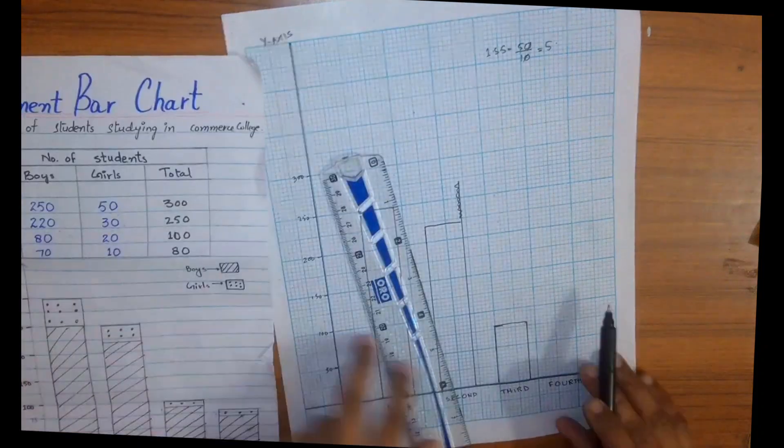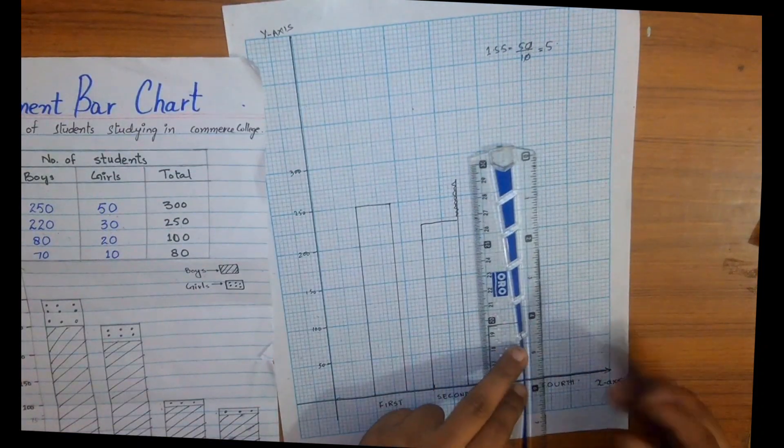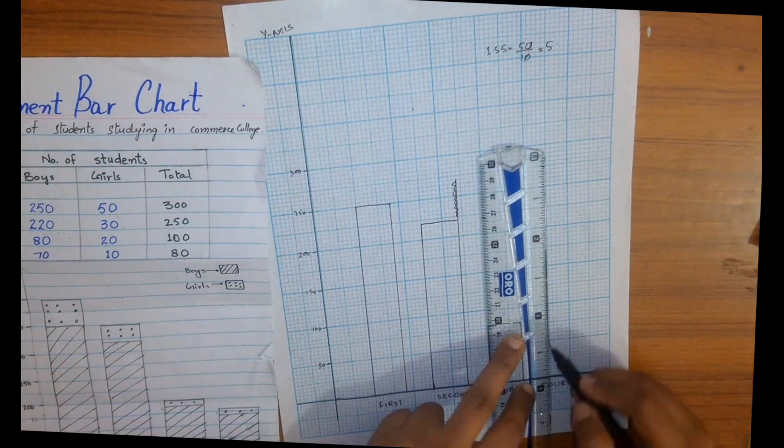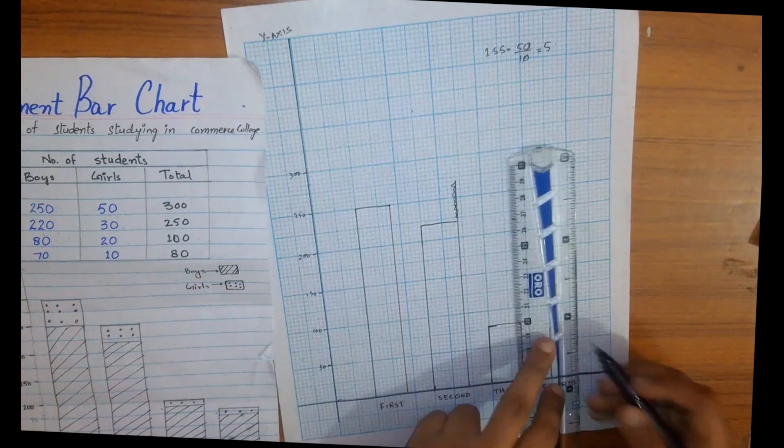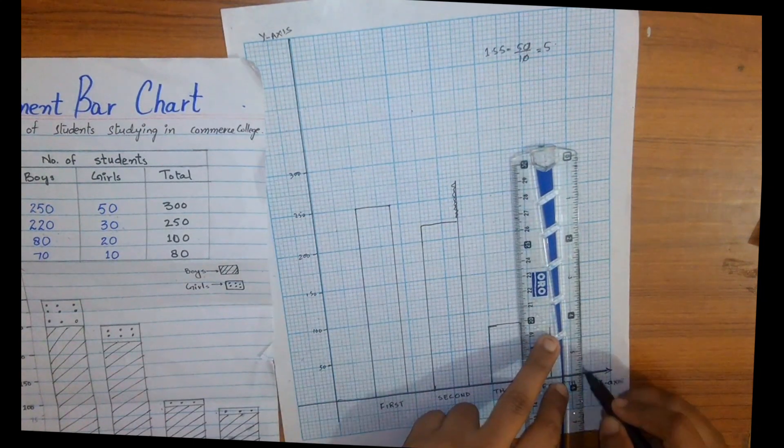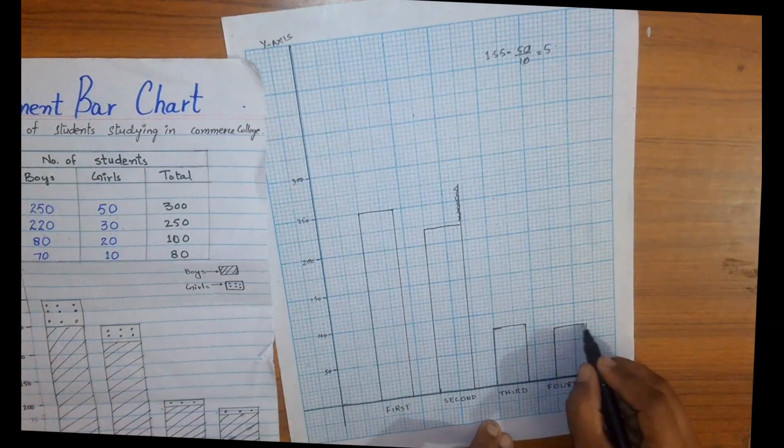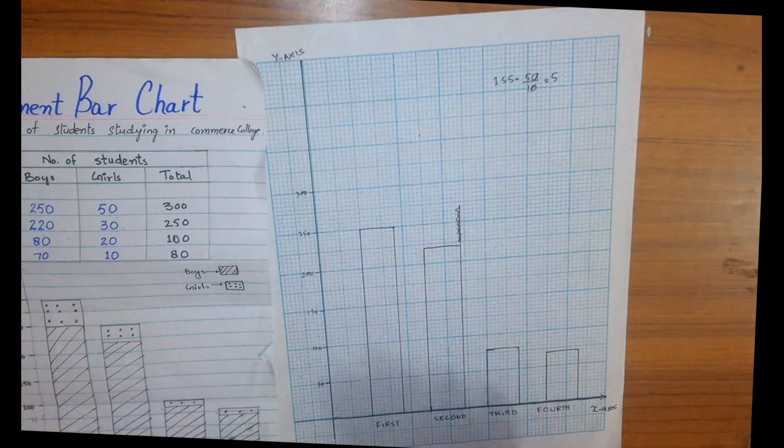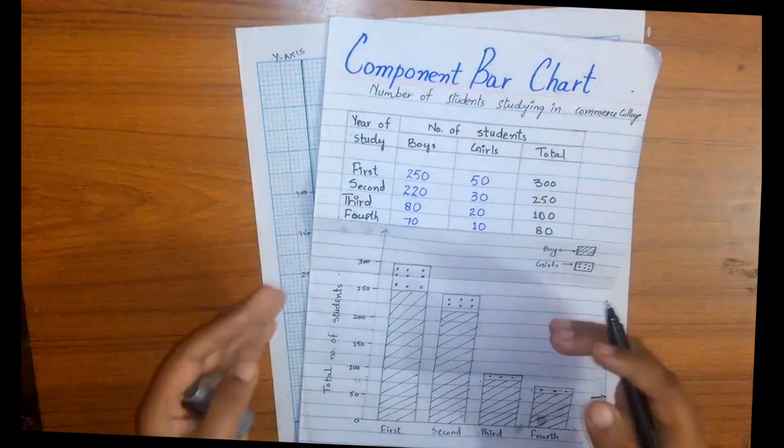In fourth year we have 70 boys: 50, 60, and 70. Here we have constructed separate bars for boys who are studying in different years of study.